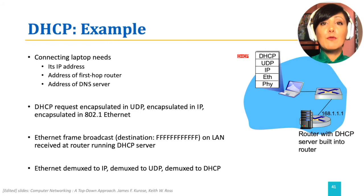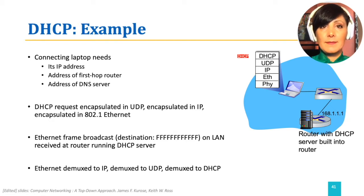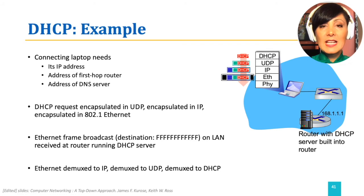For example, when you connect your laptop to a network using a Wi-Fi access point, your laptop needs an IP address with subnet mask, the address of the first hub router, and the address of the DNS server. It will use DHCP for receiving this information. The DHCP request will be encapsulated in UDP, then IP, then 802.11 — which is the Wi-Fi data link layer protocol — and sent over the wireless link.